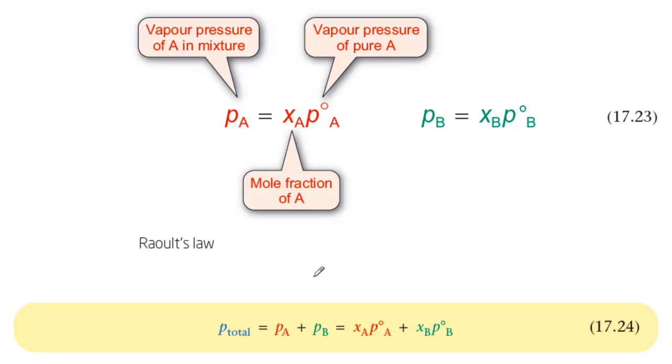Every liquid has a vapor associated with it. In general, the vapor pressure of a liquid A is the partial pressure of A in the vapor phase in equilibrium with the liquid.